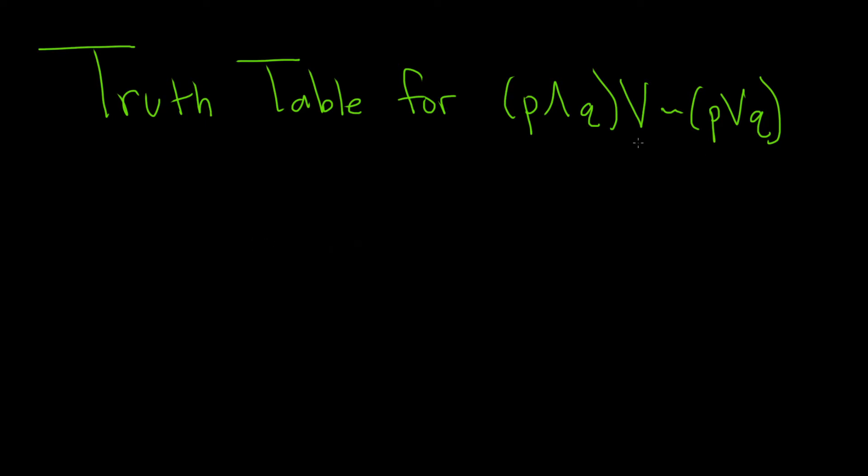In this problem, we have to create a truth table for this statement. So we'll start by writing down all the possible truth values for P and Q. So we have P and Q. The simplest case is when they're both true, so true, true.